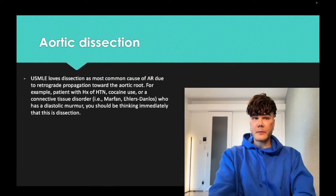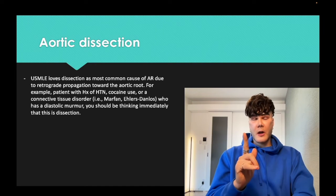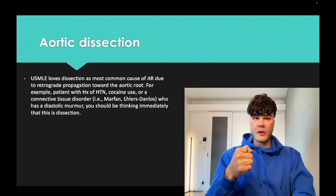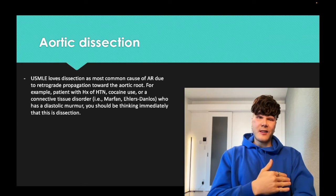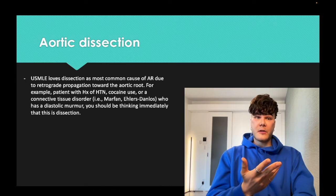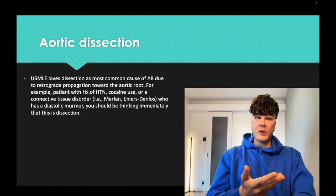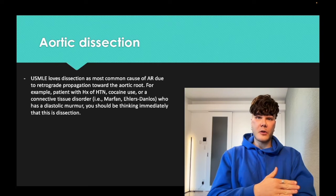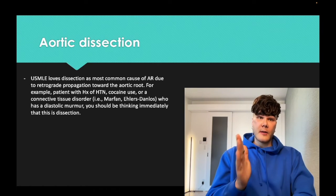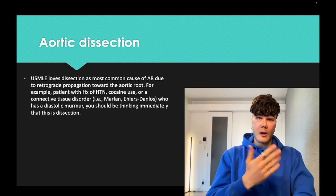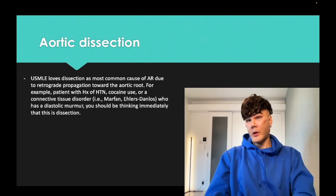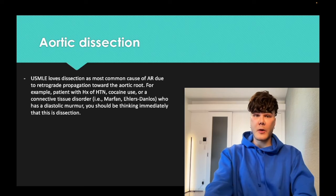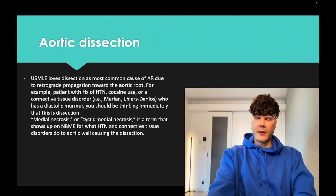Aortic dissection is classically a ripping or severe chest pain that radiates to the back — that's your textbook presentation — but the vignette doesn't even have to mention that. They can give a patient with aortic regurgitation and a connective tissue disorder, and you need to know that's dissection. The dissection can retrograde propagate to the aortic root and cause aortic regurgitation — that's your decrescendo holodiastolic early diastolic murmur.